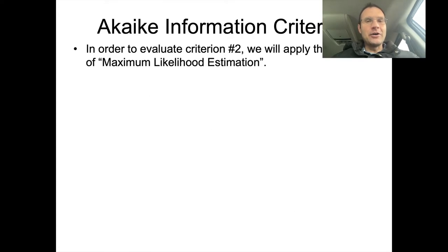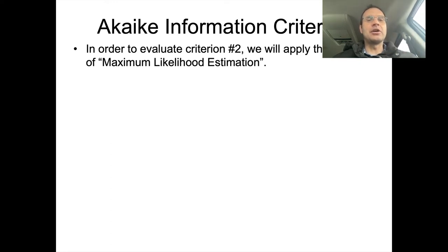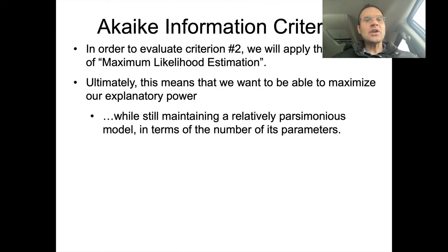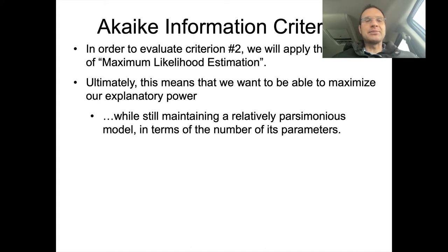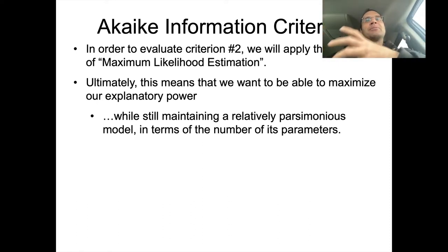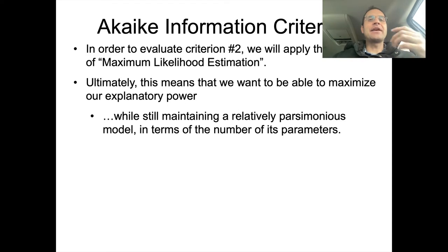In order to evaluate criterion number two — accuracy — we're going to apply the method called maximum likelihood estimation. Ultimately, this means we want to maximize our explanatory power while still maintaining a relatively parsimonious model in terms of the number of its parameters. We're just trying to find the right balance between how many parameters we're going to use and how much explanation we get out of them.